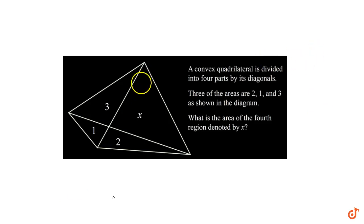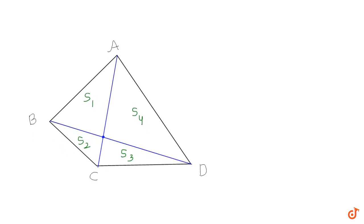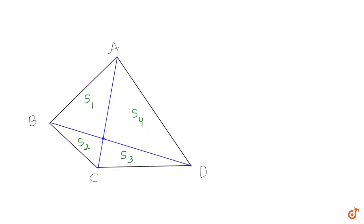Rather than solving this problem directly, we will solve a more generalized problem of this type. We have the same convex quadrilateral with two diagonals BD and AC joined, creating areas S1, S2, S3, and S4.